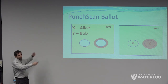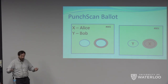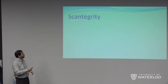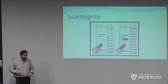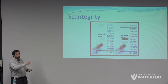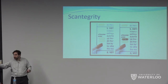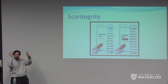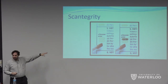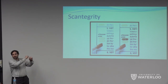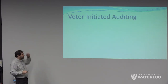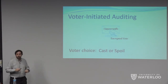Voters really like Scantegrity because you don't have messy marking — you swipe over and exactly the bubble area gets revealed and marked, it looks really pretty, and it reveals a code. The code has the advantage that a voter will only know it if they actually marked that choice, so it can be used for dispute resolution later. Voter-initiated auditing is the final trick: you basically cast a ballot or spoil it, which means have it opened on your behalf. Voters can choose — you say 'this is the encryption of my vote,' and either cast it or ask to have it opened.